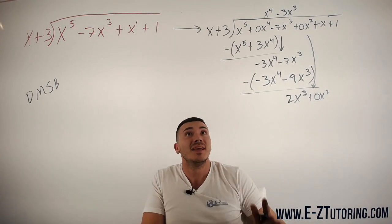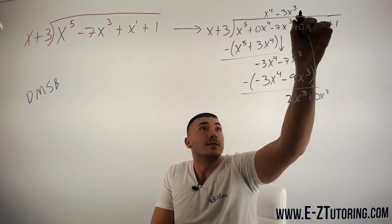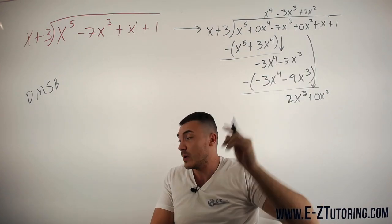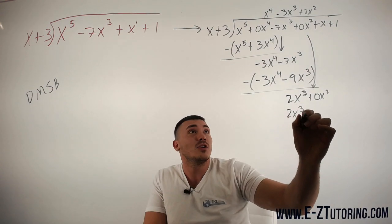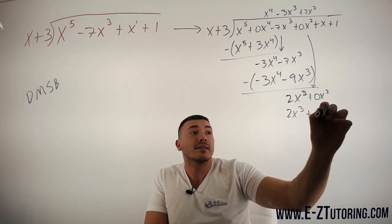Bring down the 0x squared. Start all over with D. x goes in here 2x squared amount of times. Go ahead and multiply all that. We get 2x cubed plus 6x squared.